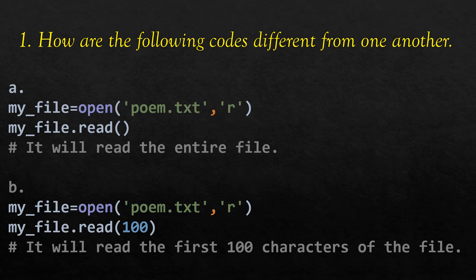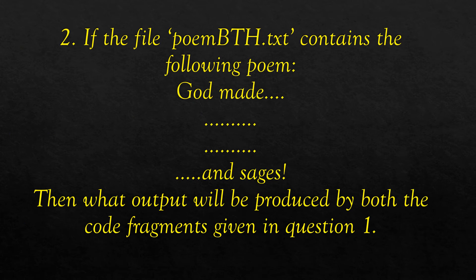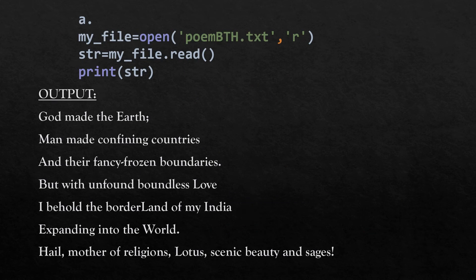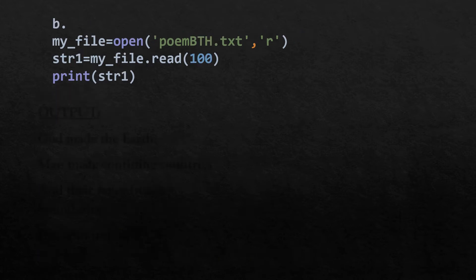The next question considers the file poem_bth.txt, which contains a poem starting with 'God made till sages.' For the first code fragment, the file is opened in reading mode and read using the read method. The content of the file is stored in a string variable called str, and the output is that the entire content of the file will be printed.